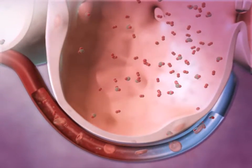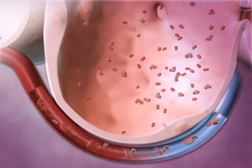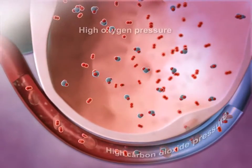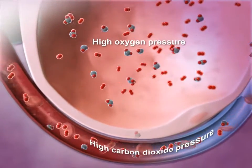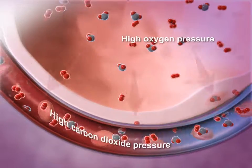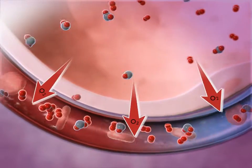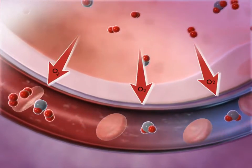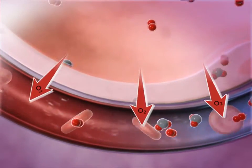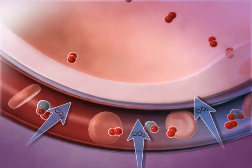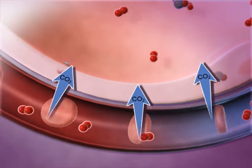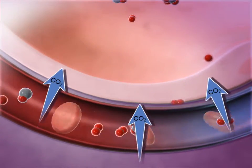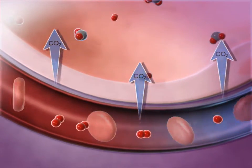Oxygen from inhaled air diffuses from the alveoli into the pulmonary capillaries surrounding them and is pumped through the bloodstream. Carbon dioxide from oxygen-depleted blood diffuses from the capillaries into the alveoli and is expelled through exhalation.